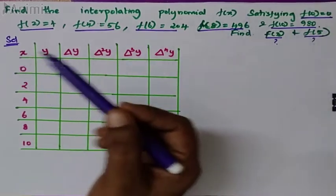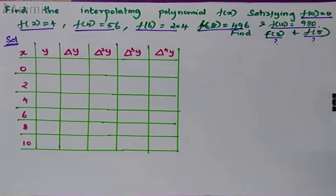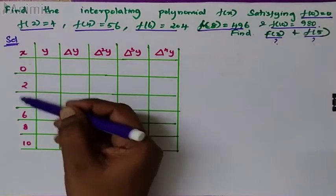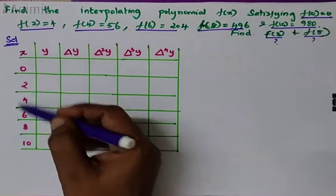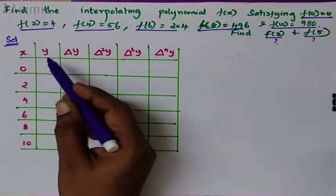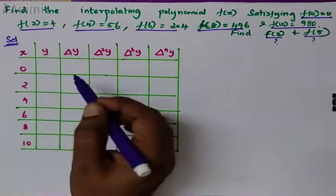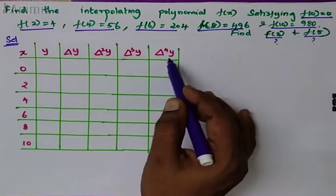So they have given the x values: 0, 2, 4, 6, 8, 10, and the corresponding function values y.